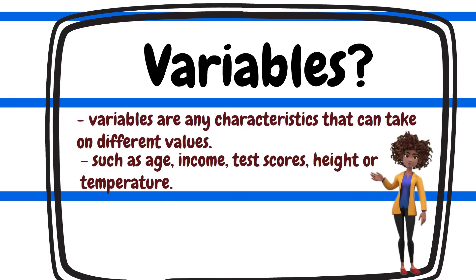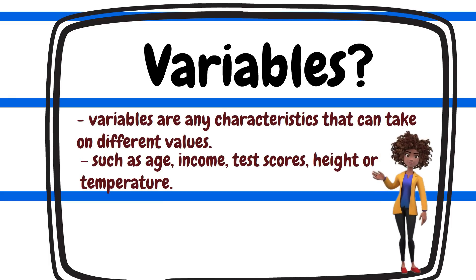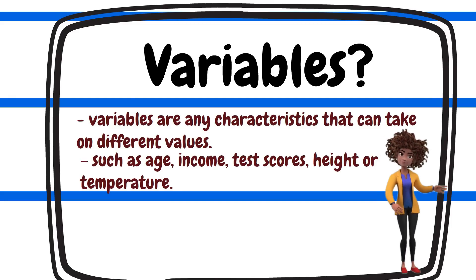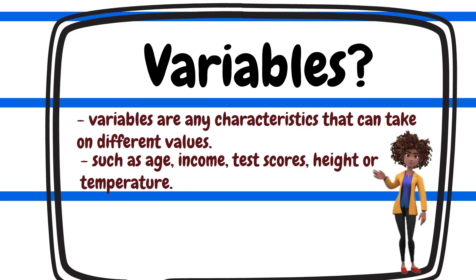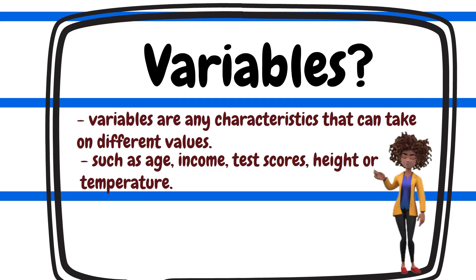For instance, age can be considered a variable because age can take different values for different people. Similarly, income can be considered a variable because a person's income can be assigned a value.